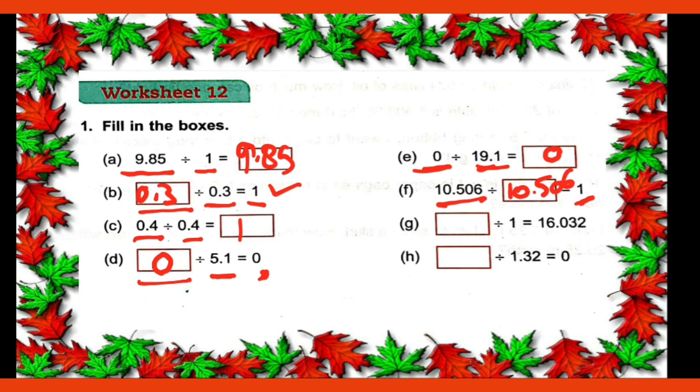Similarly here dash divided by one. When you divide any number by one, the same number comes. So answer will be 16.032. When you divide any whole number by one, same number comes. Similarly here your quotient is zero coming. Meaning your dividend is also what? Zero. So in this way you will complete your worksheet number 12 in your maths sphere notebook.